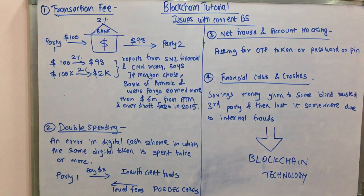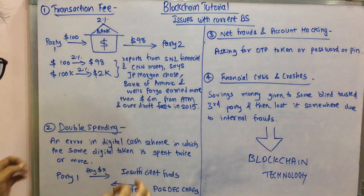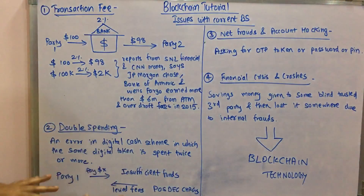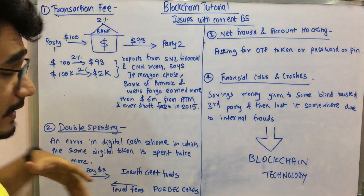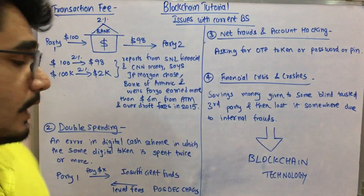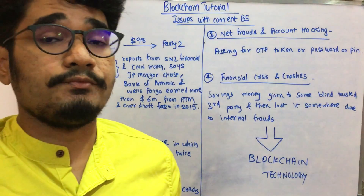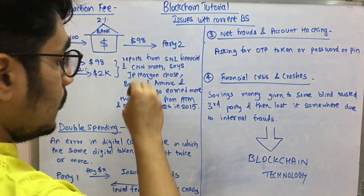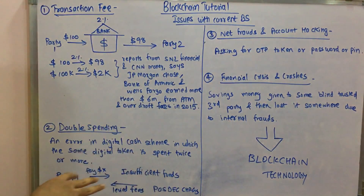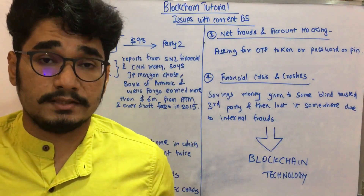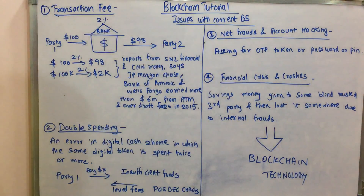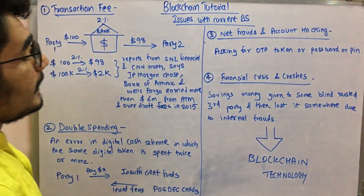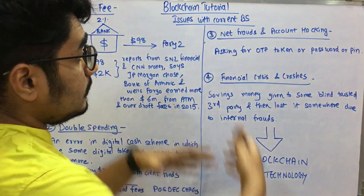Next you have the double spending issue. In double spending, an error occurs in a digital cash system in which the same digital token is spent twice or more. For example, if party one wants to pay X dollars to party two but doesn't have sufficient funds in his account, he is levied some fees — called point-of-sale declination charges. That's another kind of issue, double spending, which occurs in the current banking system.